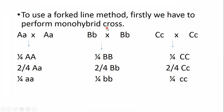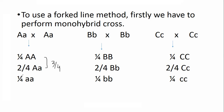A monohybrid cross, also known as a one character cross, involves a single gene pair. We have three gene pairs in F1 generation and must calculate individual probabilities for each. For the first gene pair A in heterozygous condition, the result is: one out of four offspring with dominant homozygous condition, two out of four in heterozygous condition representing dominant phenotype, and one out of four with recessive phenotype — giving a phenotype ratio of 3:1 dominant to recessive.